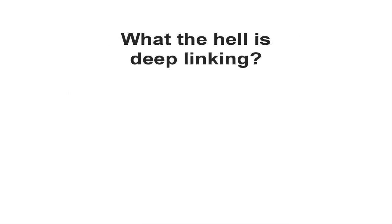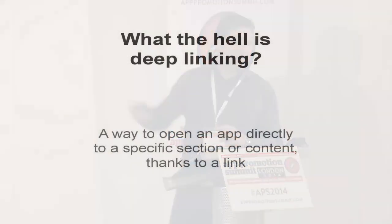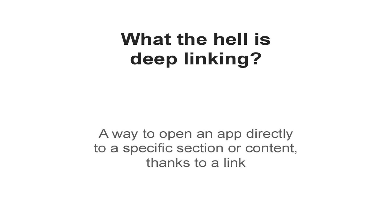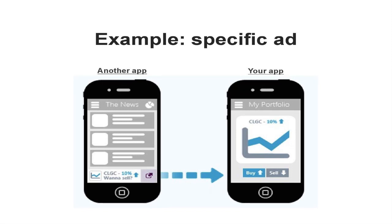So what is deep linking? It's my definition: it's a way to open an app directly to a specific section or content, thanks to a link. Quite straightforward, but we'll have some examples. And it is currently trending — the deep linking expression has been mentioned throughout the day — because deep linking is a requirement for retargeting. You can't do retargeting on mobile without deep linking. It's a requirement. That's why it's currently trending.